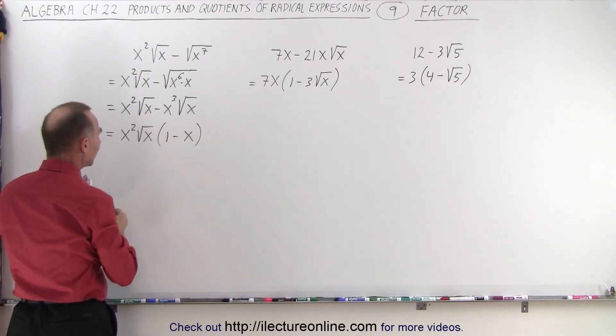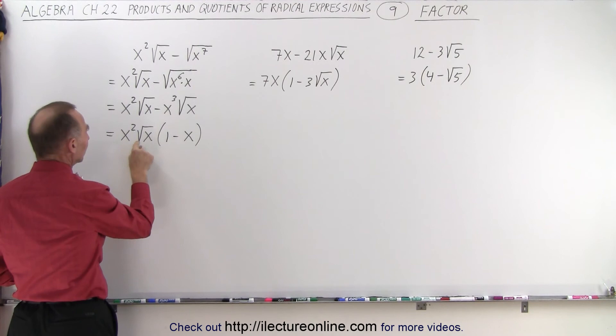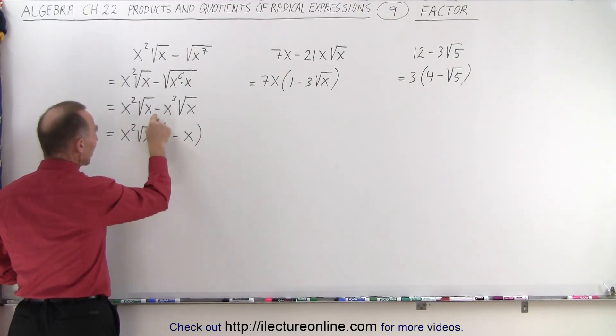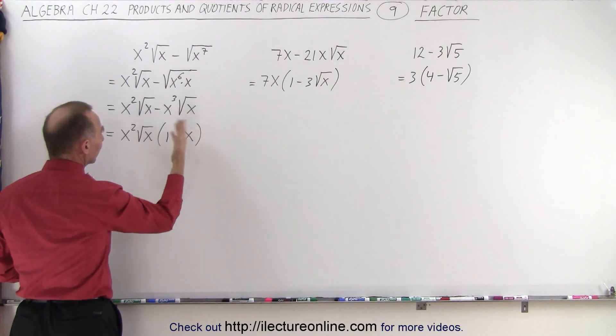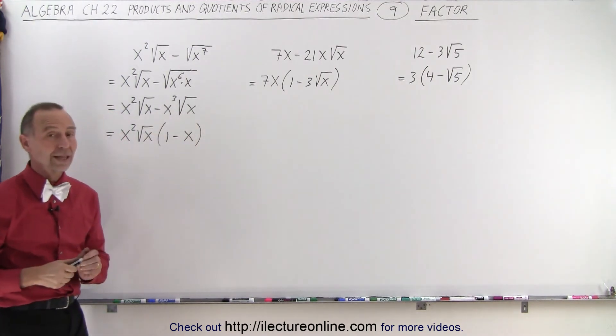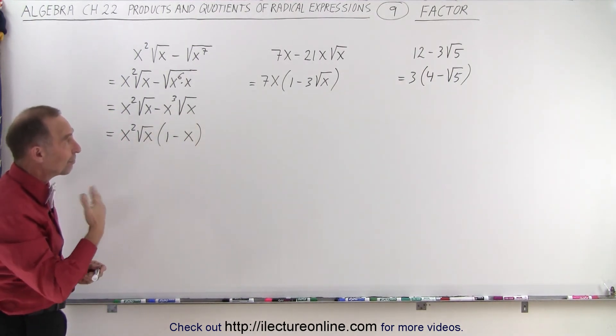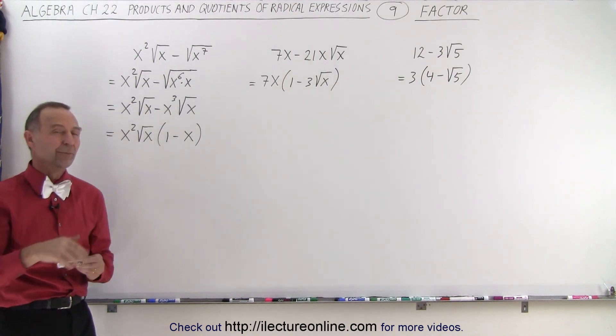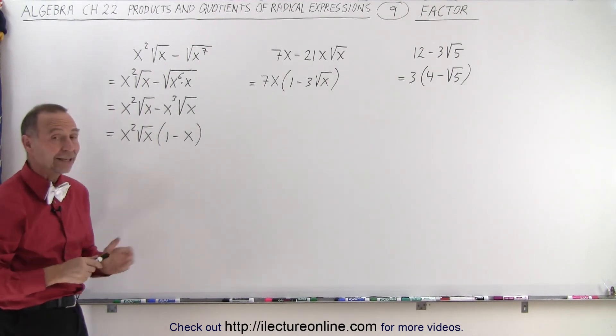Just to make sure we did it correctly, 1 times x squared times the square root of x gives us this. And minus x times this gives us minus x cubed times the square root of x. So it looks like that's the right thing. And so this is how we factor, basically the opposite of multiplying things out. And that is how it's done.